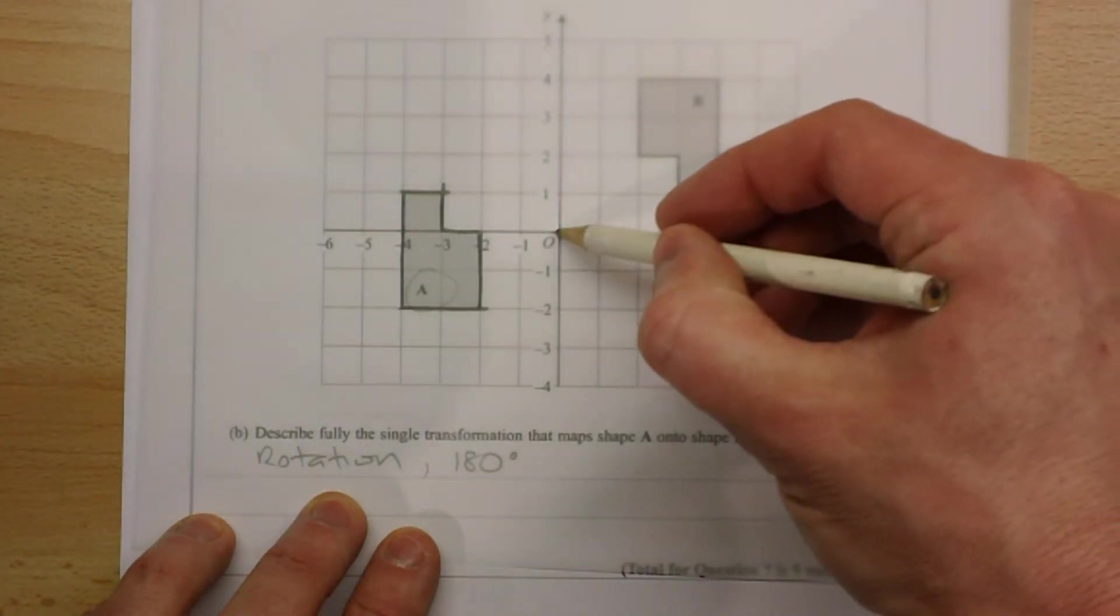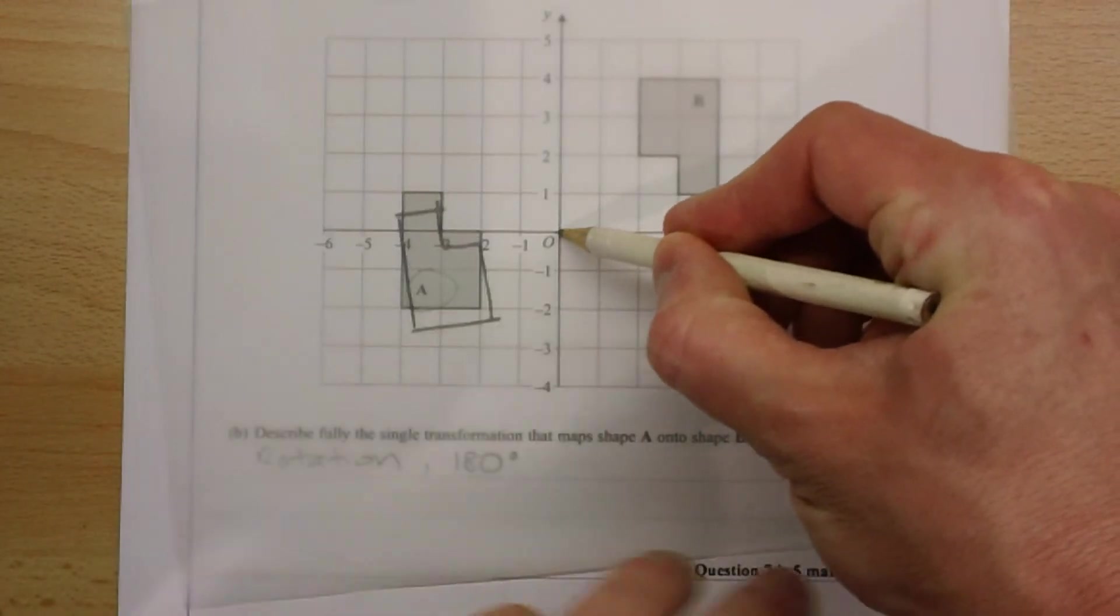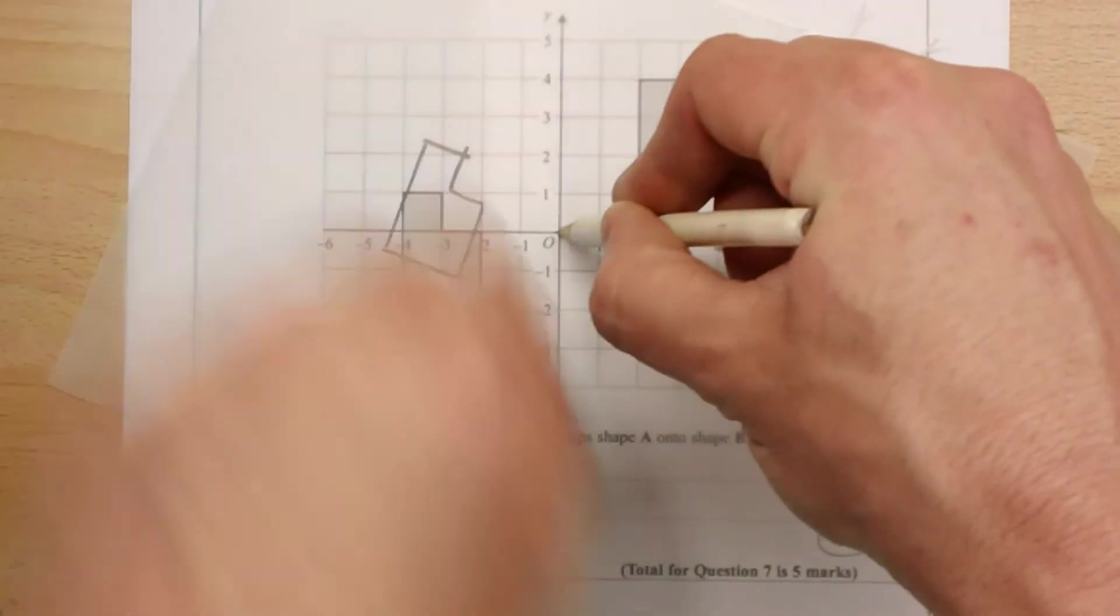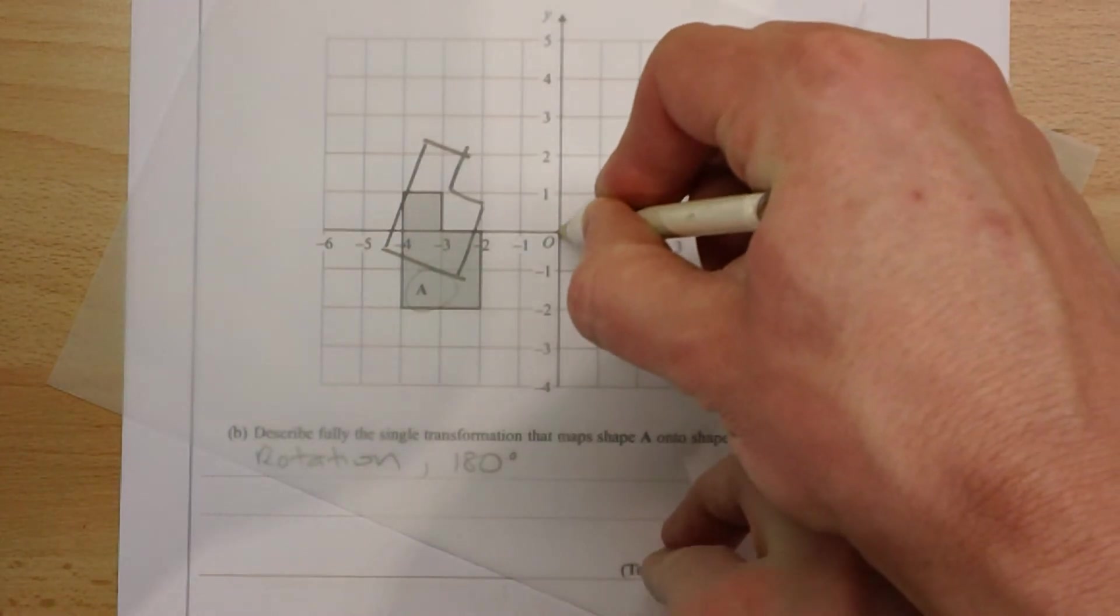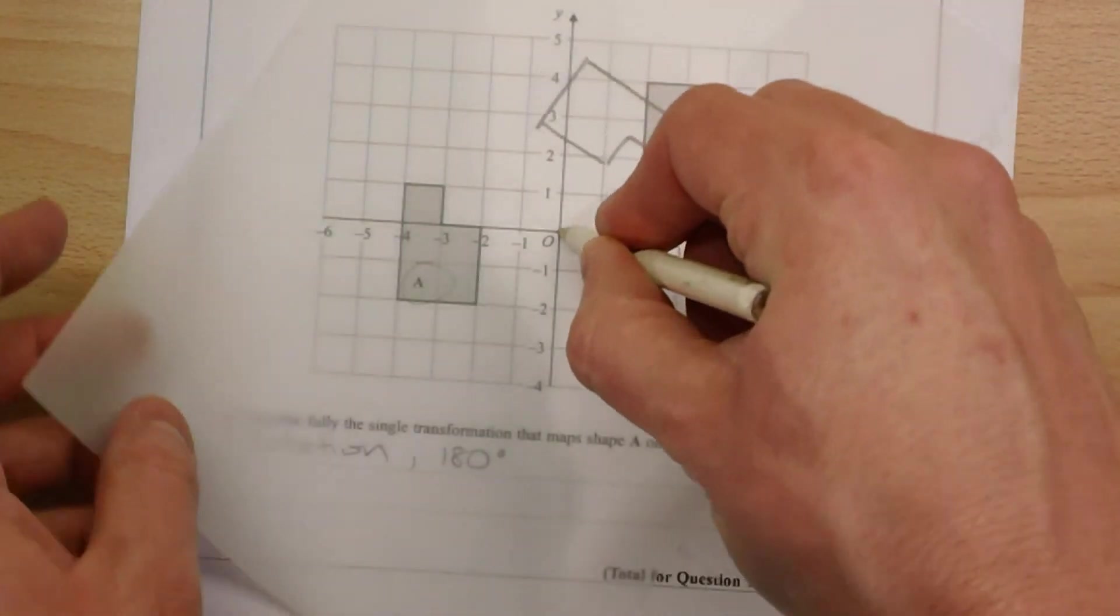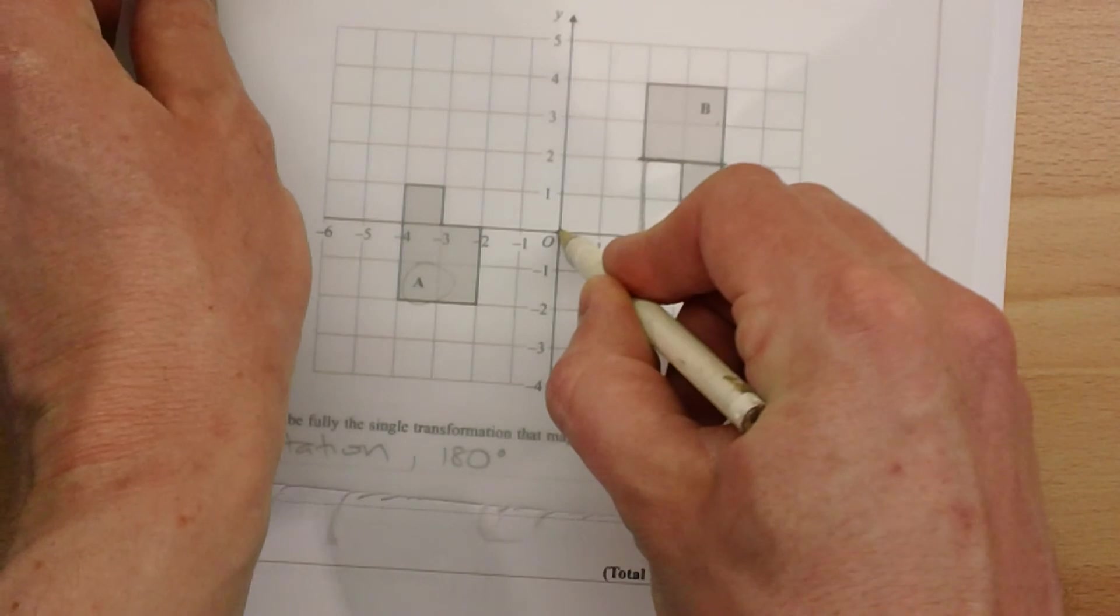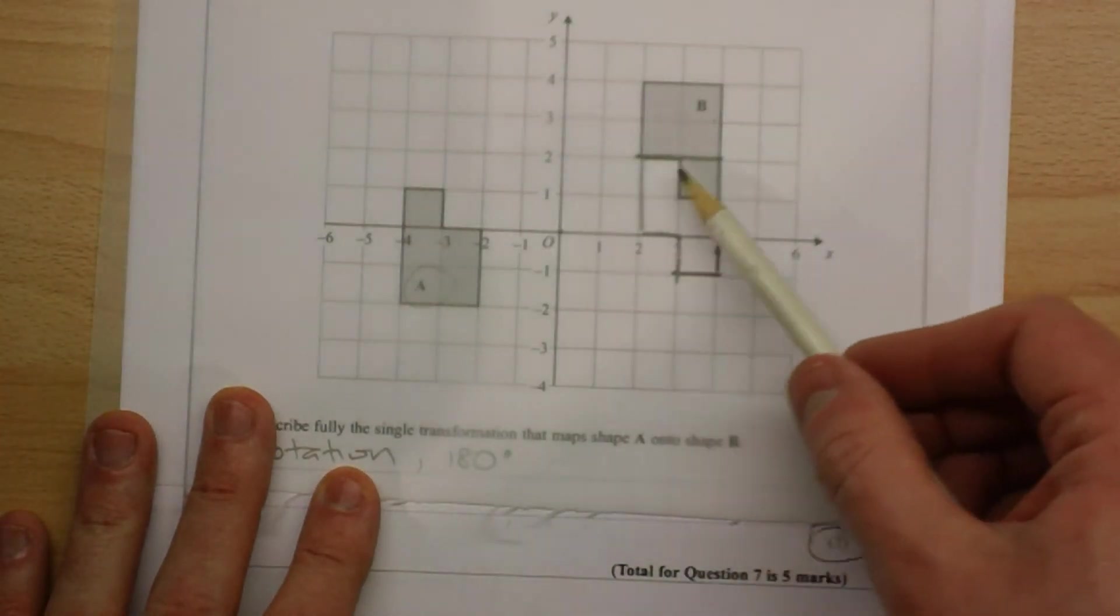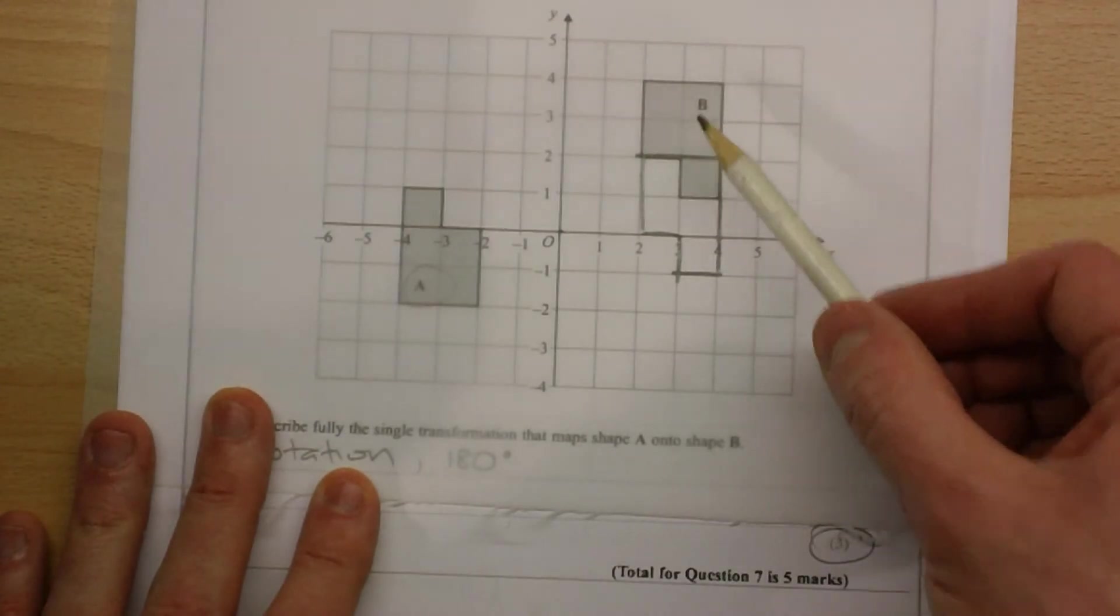So for example, if I pick right there, the origin, where the two axes cross, and I spin a piece of paper 180 degrees. Right, you should be able to see that that obviously wasn't the center of rotation because this doesn't overlap shape B.